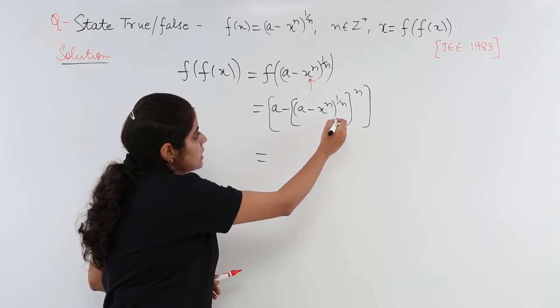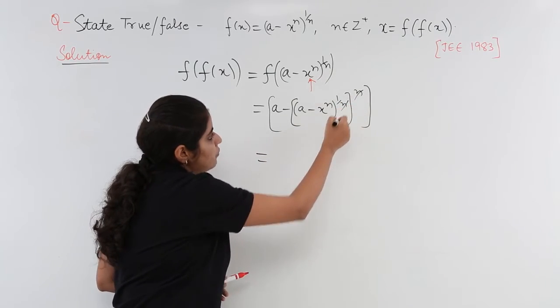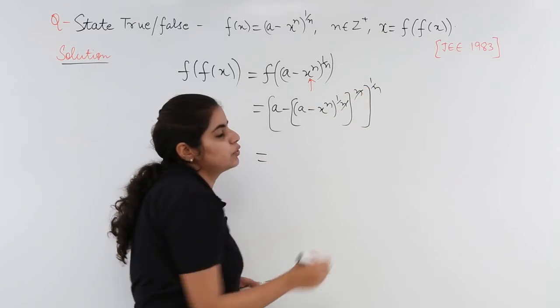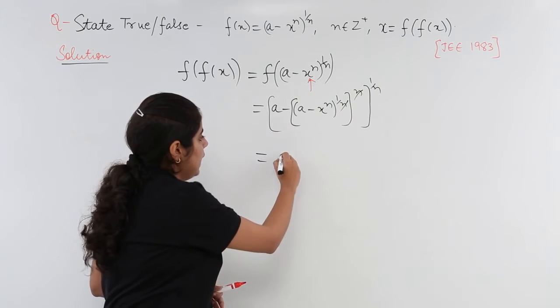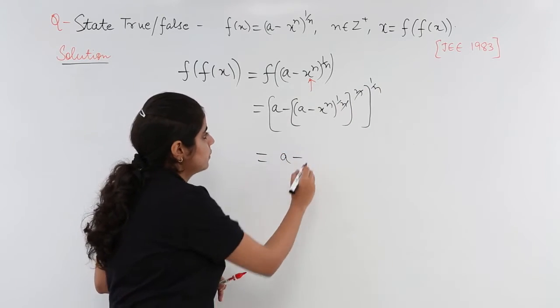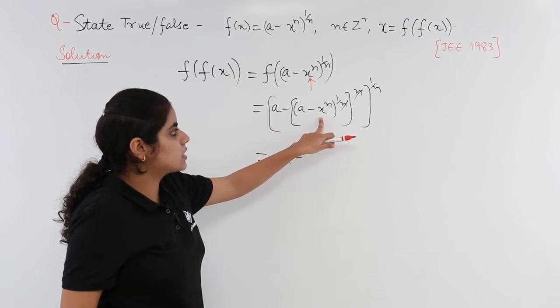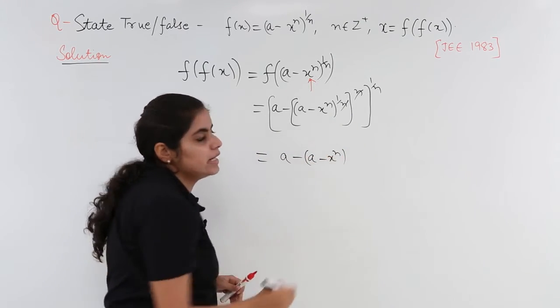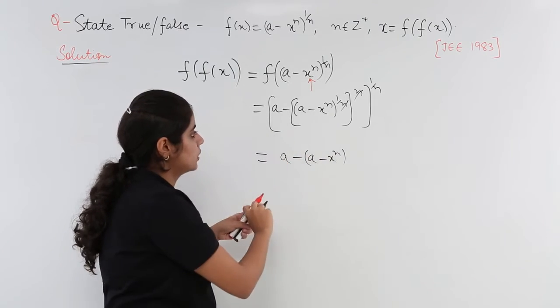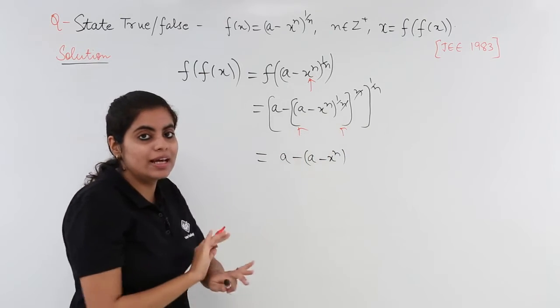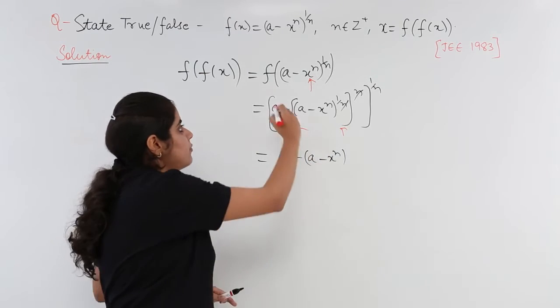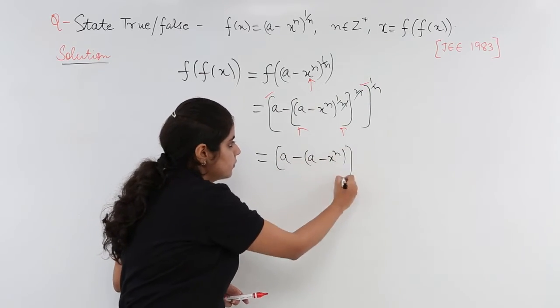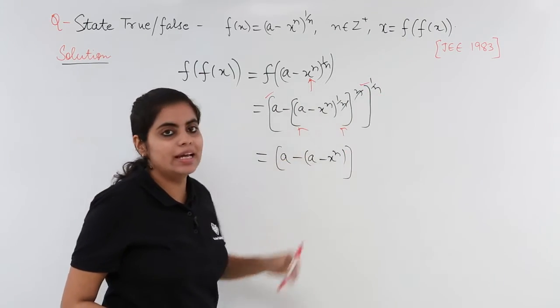Now what happens is I see that n and 1/n gets cancelled. The whole power 1/n was there which I have to write. What is left? a is left, minus is left. Now (a - x^n) is left and the whole bracket. These brackets have gone, they are cancelled. Which bracket is left? The outside brackets are left. So you put the outside bracket.